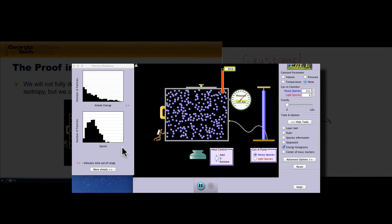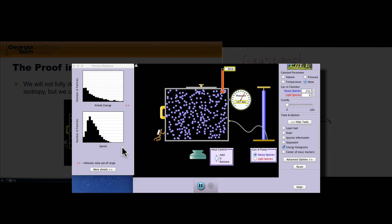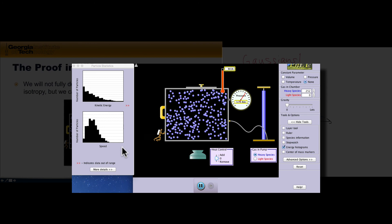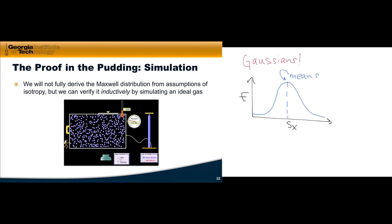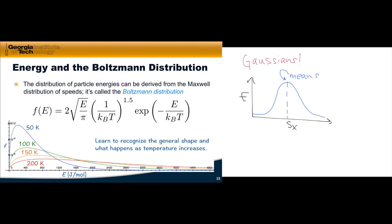So the proof is in the pudding in terms of this simulation. This is empirical justification for the Maxwell distribution. Now that we've seen the distribution of speeds, we can actually derive the distribution of energies for the particles in an ideal gas. It's called the Boltzmann distribution, and the general shape of a Boltzmann type distribution of energy is shown for you here. The fraction of particles with a particular energy is proportional to the square root of the energy times the exponential of -E/(kbT), where kb is Boltzmann's constant times the temperature.